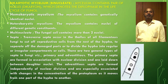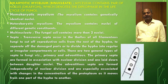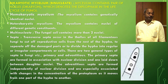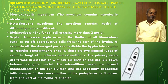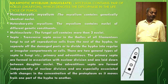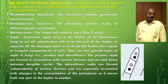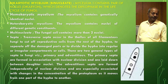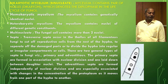The mycelium is separated into different compartments by septa. Transverse septa occur in the thallus of all filamentous fungi to cut off reproductive cells from the rest of the hyphae, separate damaged parts, or divide hyphae into compartments. There are two general types of septa: primary septa, formed in association with nuclear division and laid down between daughter nuclei, and adventitious septa, formed independently of nuclear division.